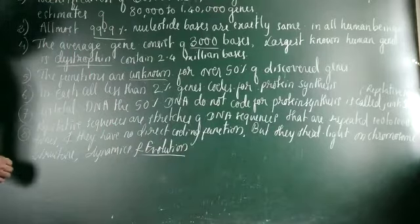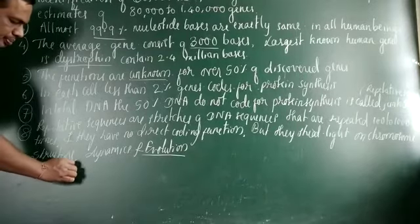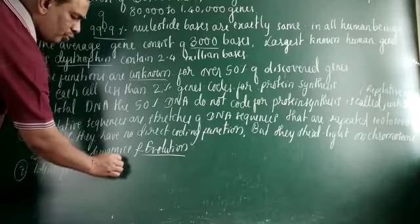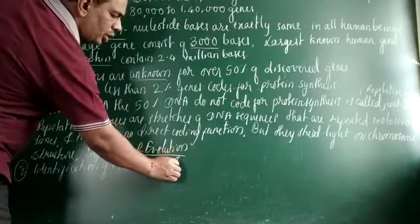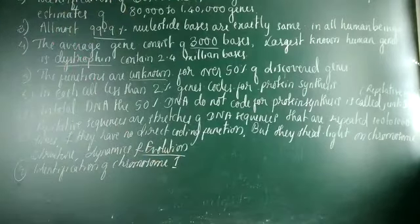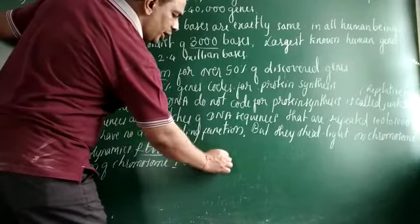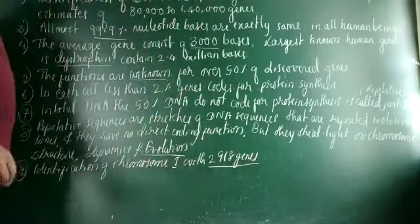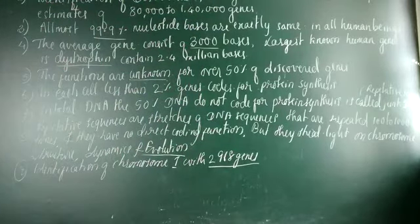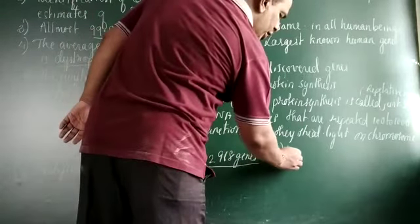Identification of chromosomes: Chromosome 1 is the largest chromosome, with 2,968 genes. The smallest chromosome is the Y chromosome, which has the lowest number of genes.